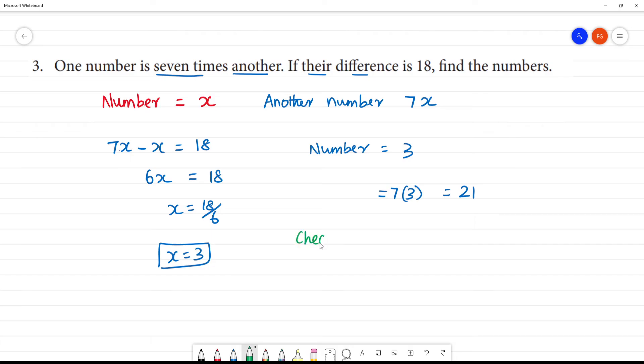Now we check. The difference between them, that is 21 minus 3, that is equal to 18.